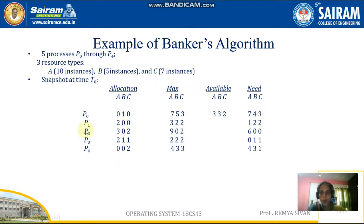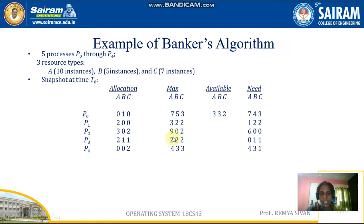P2 is allocated with 3A, 0B, 2C, and the maximum it requires is 9A, 0B, 2C. So the need is: 9 minus 3 is 6, 0, 0. P3 is allocated with 2A, 1B, 1C. Maximum P3 requires 2A, 2B, 2C, and the need is 0A, 1B, 1C.